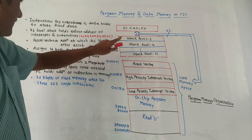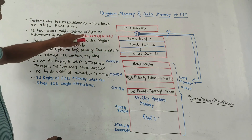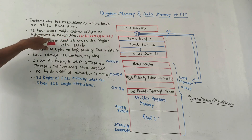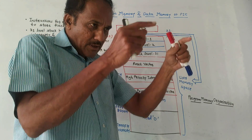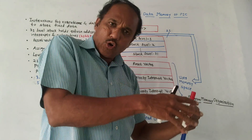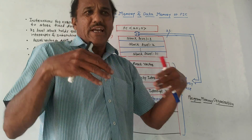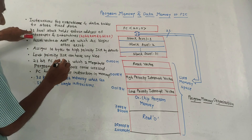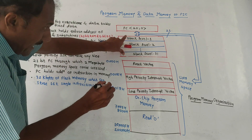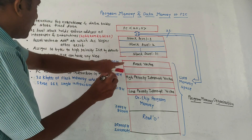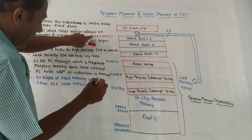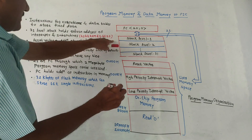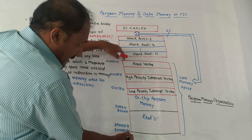The 31-level stack holds the return address of interrupts and subroutines. Whenever we call any interrupt or subroutine, the return address must be stored — that is the major function of the stack. As mentioned, the stack is not part of program memory. It has 21-bit RAM and a 5-bit stack pointer (SP).